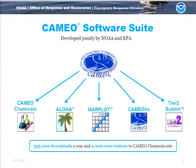Aloha is an air model. You give it environmental conditions — wind direction, temperature, chemical spill, release rate — and it gives you a picture of the predicted plume going downwind. Marplot is the mapping component, which I'll talk about here. Cameo FM is the database component.